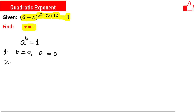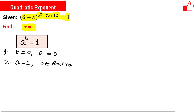The second situation is if a equals 1 and b is any real number — then a raised to the power b equals 1. The third situation is if a equals minus 1 and b is an even number — in that case also the equation is satisfied.